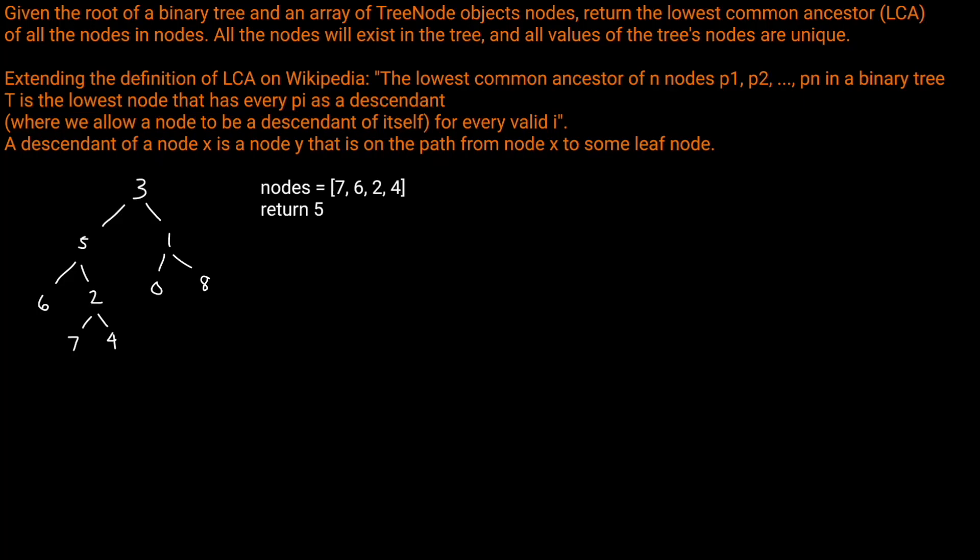Hello, and welcome back to the Cracking Fang YouTube channel. Today we're going to be solving LeetCode problem 1676, lowest common ancestor of a binary tree 4. Let's read the question prompt. Given the root of a binary tree and an array of tree node objects, nodes, return the lowest common ancestor (LCA) of all the nodes in nodes.